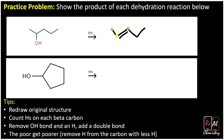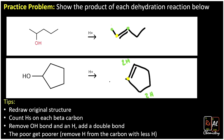The second practice problem involves a five-membered carbon ring with an OH group. Our alpha carbon is identified, and the beta carbons are above and below it, each with two hydrogens. Since it's a tie, it doesn't matter which side you choose — you get the same product either way. The result is cyclopentene. Whether you place the double bond at the top or bottom, rotating the molecule shows it's identical.